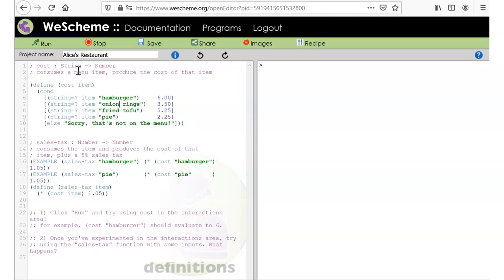Well, the design recipe tells us a lot about this function cost. So cost is going to take in a string and return a number. And it consumes a menu item and produces the cost of that item. So what are some familiar things I see? Well, here's a function definition. Here's cost. Here's the variable item. We don't have any examples for this function cost. And that's because we're going to do them later. So they didn't want to give them away to you.